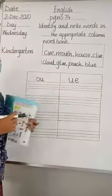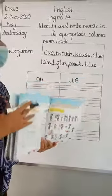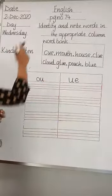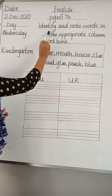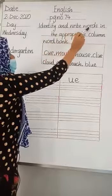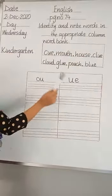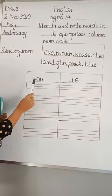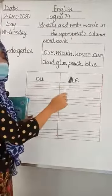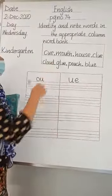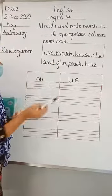Now come to the board and we do this exercise on the board. Look at the board. It's page number 74 and we have to identify and write words in the appropriate column. Two columns are given. The first one is the 'ow' sound and the second one is 'u' sound. A word bank is also given with some words.